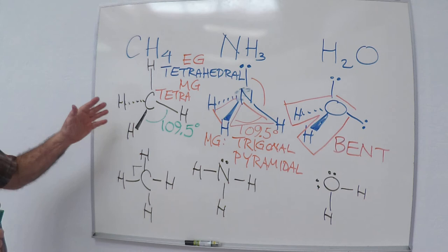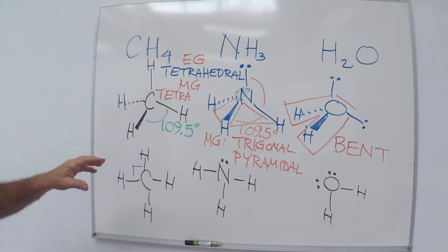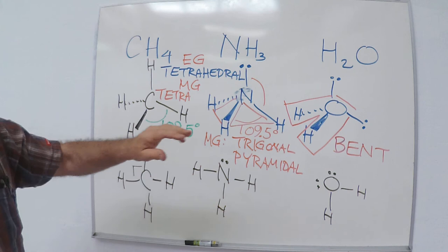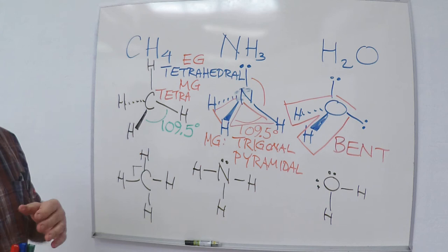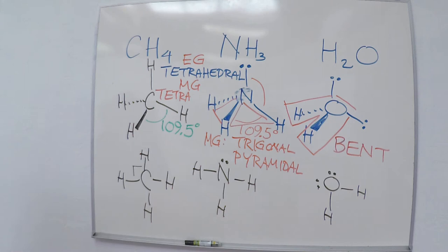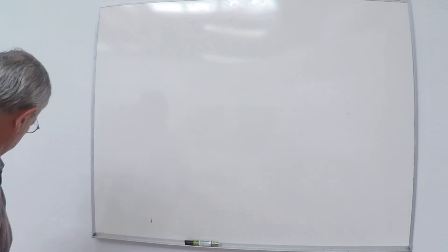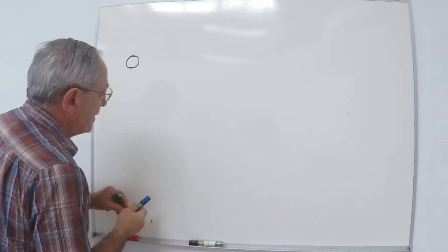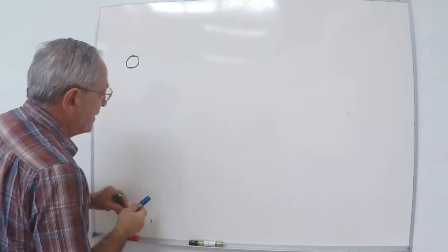You can envision this another way. If you envision the central atom as being at the center of a sphere and the atoms or lone pairs moving on the surface of a sphere, then you'll get the same result. That's the Gillespie model of how to visualize this. Now, I've only talked about one example here, an atom bonded to four groups. But we see that even though the electronic geometry is the same, we have three different molecular geometries. There are five fundamental arrangements of atoms attached to a central atom.